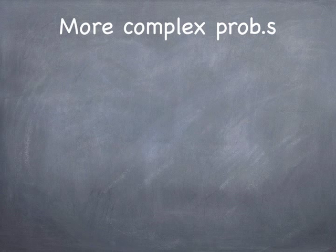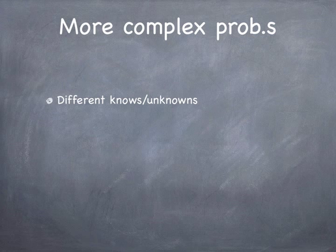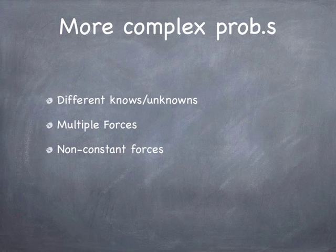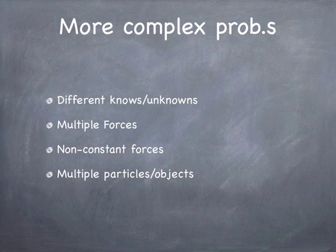There are more complicated problems where the force is not constant. We can have different knowns and unknowns — maybe we know the force and the change in momentum but not the time. We can also have more than one force; remember it's the net force, or the sum of all forces, that causes the change in momentum. We can have non-constant forces, and we can have multiple particles and objects. At that point, we can make the system all objects together, or pick one object as the system and treat the others as surroundings. It just takes practice.